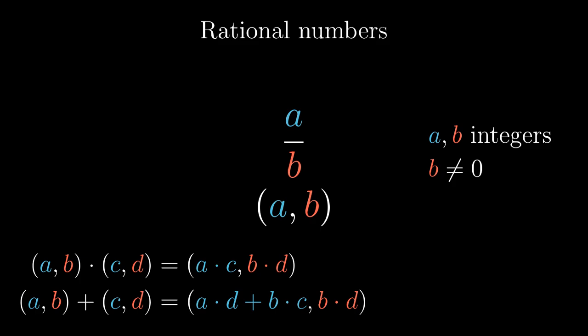Multiple fractions can correspond to the same rational number. For example, -3 over 6 should be the same number as 2 over -4. But formally, the ordered pair (-3,6) is different from the ordered pair (2,-4).